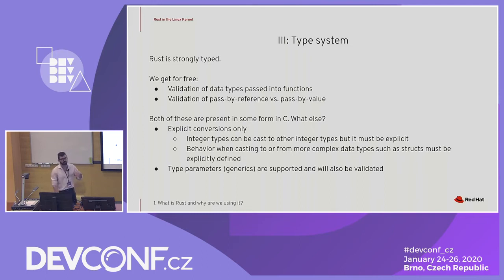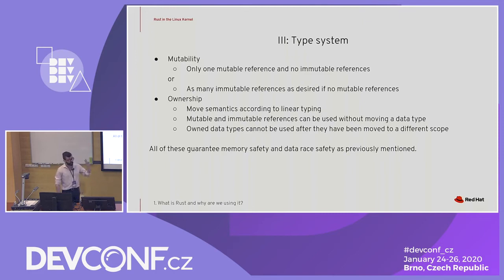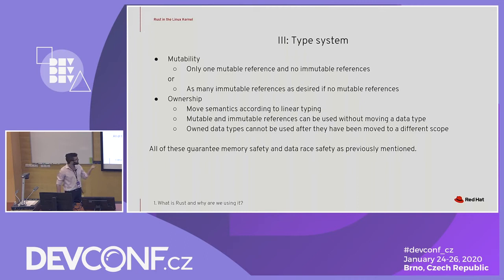We're going to have type parameters, or generics as they're known in a lot of other languages — this is also validated and supported by the compiler. We have mutability checks, and what this gives us is two rules: we can either have one mutable reference and no immutable references to prevent read-write corruption, or we can have as many immutable references as we want and no mutable references. You can think of it like a read-write lock at the compiler level.